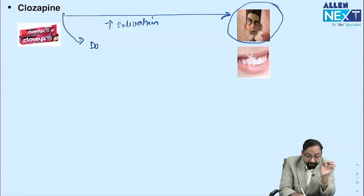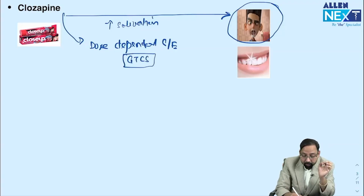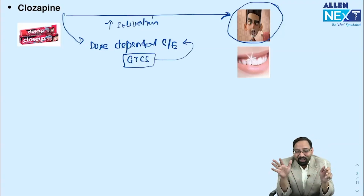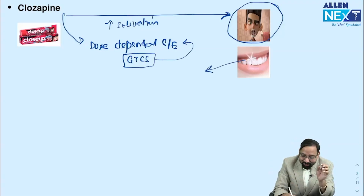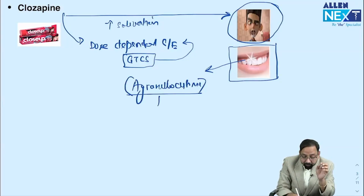The seizures caused by clozapine are generalized tonic-clonic seizures, and this is a dose-dependent side effect. Another important side effect is agranulocytosis. The mnemonic continues: if you brush properly, there would be no granule — agranulocytosis. This is a very dangerous side effect, which is why we must monitor the patient regularly.